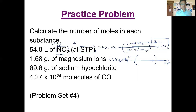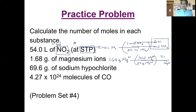The molar mass of the magnesium ion is the same as the molar mass of neutral magnesium. So we divide by the molar mass of magnesium — 24 grams per mole — and that gives us an answer of 7.00 × 10⁻² moles of magnesium ion.